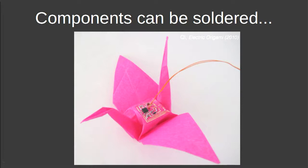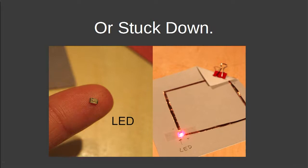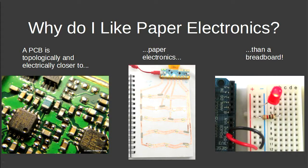You can solder down components — like a crane with a soldered circuit and muscle wire so the wings slowly flap — or stick down an SMD LED with copper tape and a piece of tape on top. A circuit board is topologically and electrically closer to paper electronics than a breadboard. With a breadboard you can rat's nest stuff and learn bad principles, but with paper electronics you have to think about routing, wire crossings, and impedance.